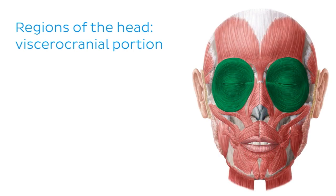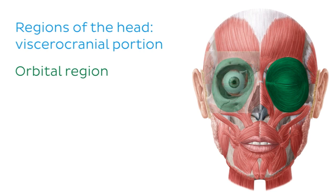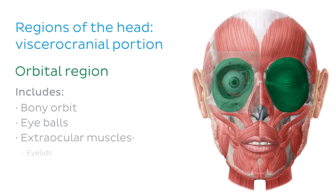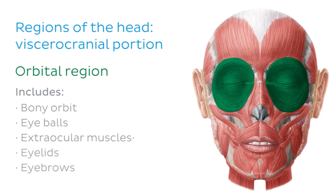The first region we'll discuss is the orbital region. This is one of five bilateral regions of the viscerocranial portion of the head. Removing the surrounding muscular tissue, we can see several structures: the eye socket, also known as the bony orbit, the soft tissue organs within it such as the eyeball and surrounding eye muscles, as well as the eyelids and eyebrows. The orbicularis oculi — the circular muscles highlighted in green around the eyes — are also found in this region.